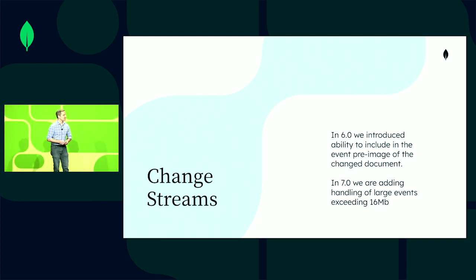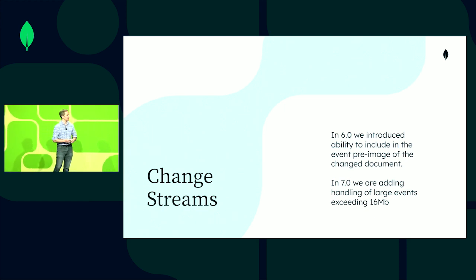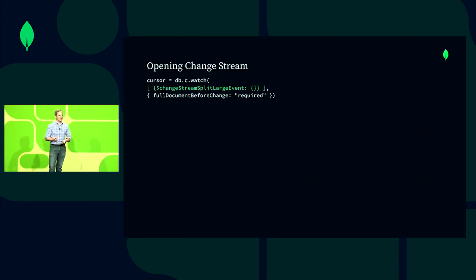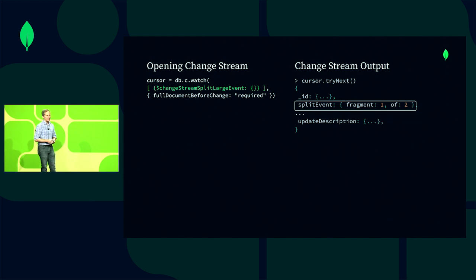Change streams is also improving. In 6.0, we announced the ability to view pre and post images for a change stream event, but there was a 16 MB size limit for the entire event. In 7.0, we now handle large events exceeding 16 MB through a large event listener. The listener splits events into individual fragments, each under 16 MB, and then lets you reassemble those fragments and process the event as a whole.